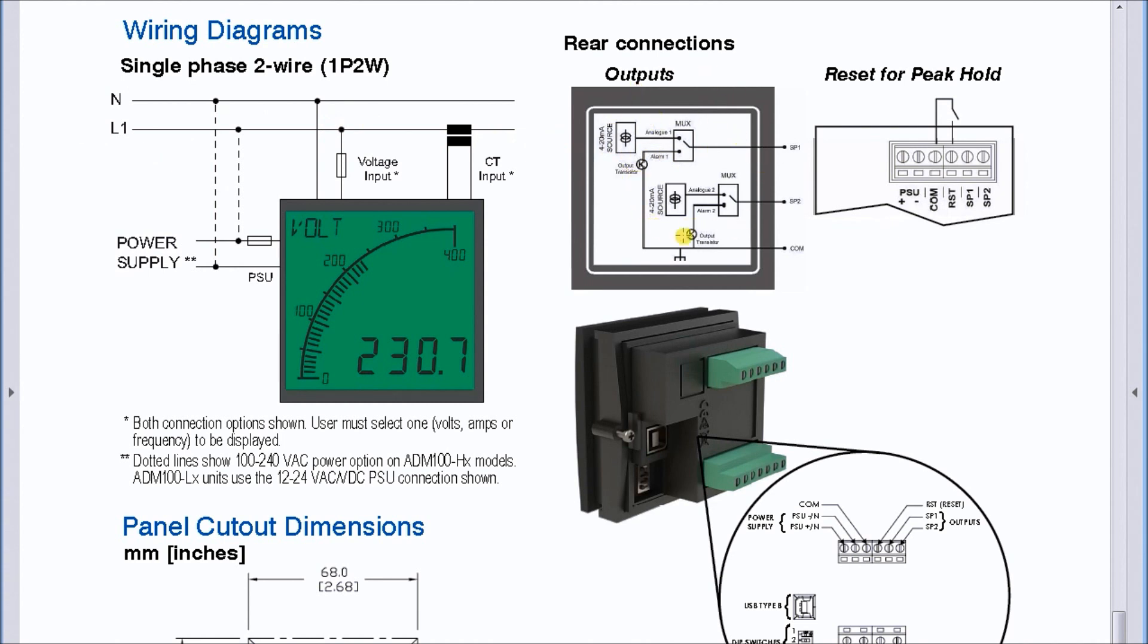Then we have our voltage input or CT input, and then we have our rear connections here. We have a reset for peak hold and our unit here shows the terminal strips and the pin connectors.